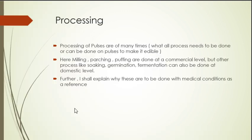Processing of pulses is of many types. It all depends on the need of the final product and how edible you want to make it — that is why processing is done. Milling, parching, and puffing are done at the commercial level, while others like soaking, germination, and fermentation can also be done at the domestic level, i.e., in your kitchen. I'll explain why these are done with medical conditions as a reference.